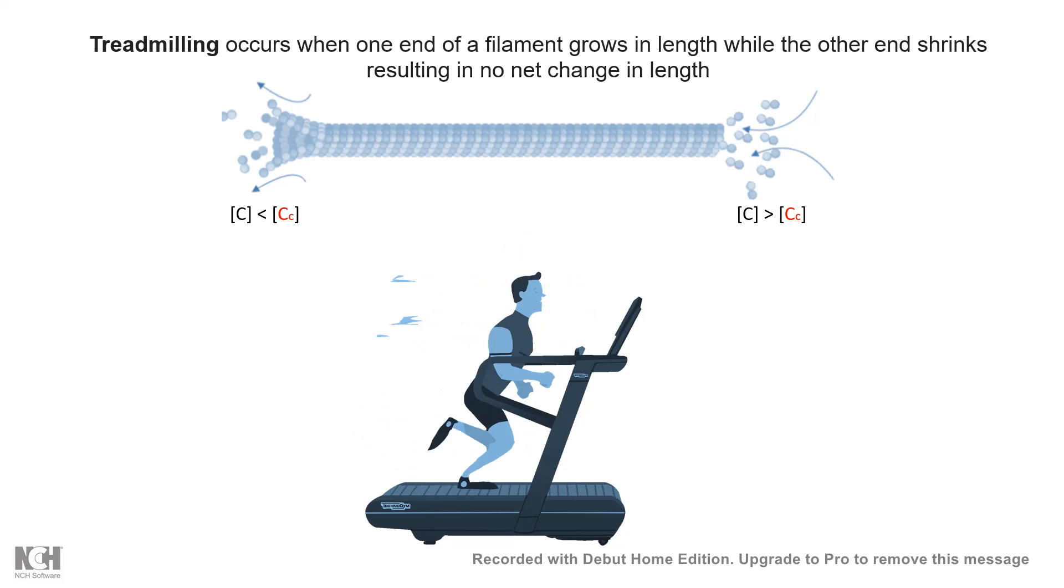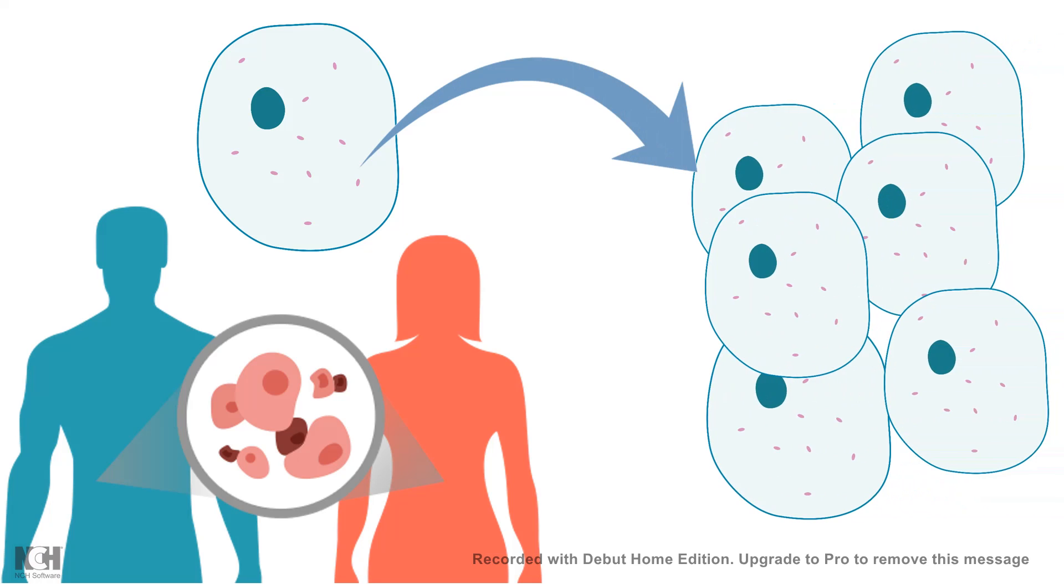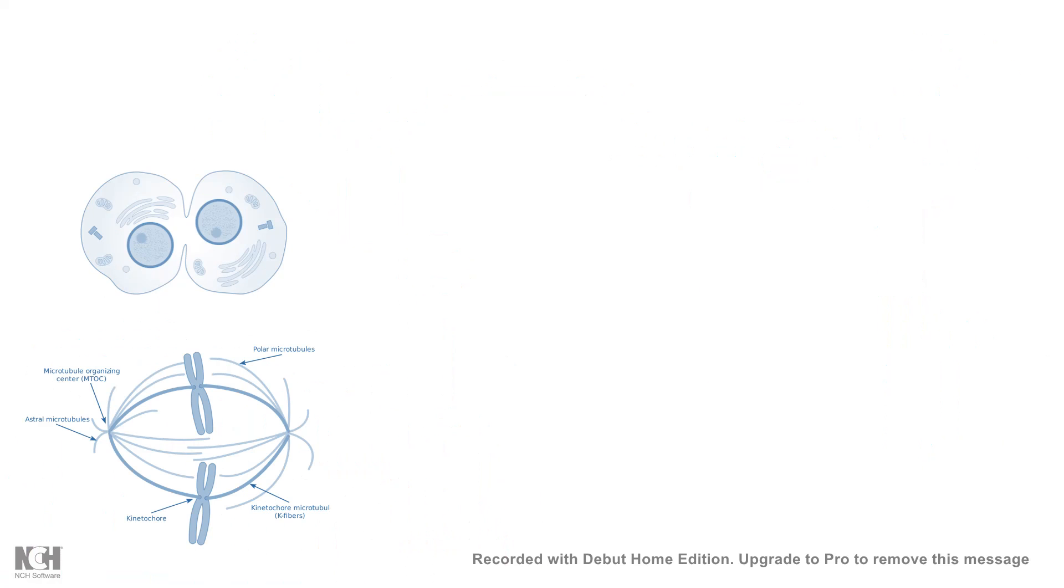Now microtubule dynamic instability is very important in context of several diseases like cancer. In cancer, the hallmark of cancer is dramatic increase of cell division. The tumor cells divide rapidly and vigorously. And you know that when the cells divide they need microtubule dynamics, right? Specifically they need the spindles to be contracted and expanded in order for the chromosomes to move to opposite poles.